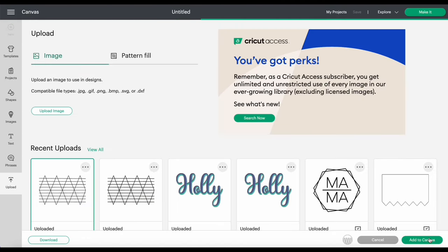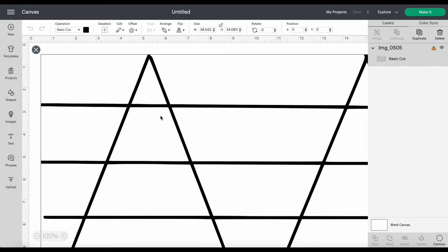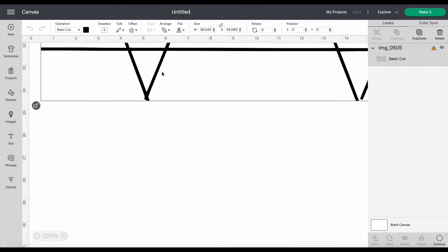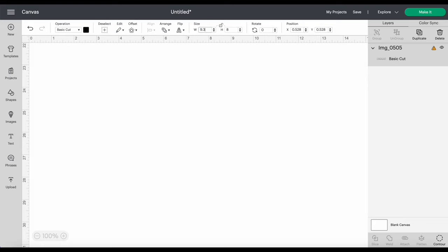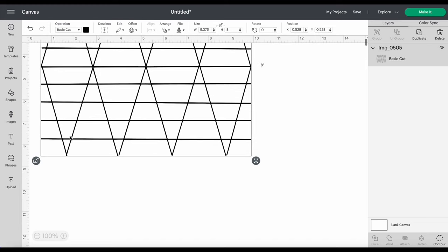I'm uploading it as a cut image. I already have one but I forgot to record, so I decided to do the whole process over. I just unlocked the lock to resize, and I'm sizing it to the size of the tumbler that I'm using.